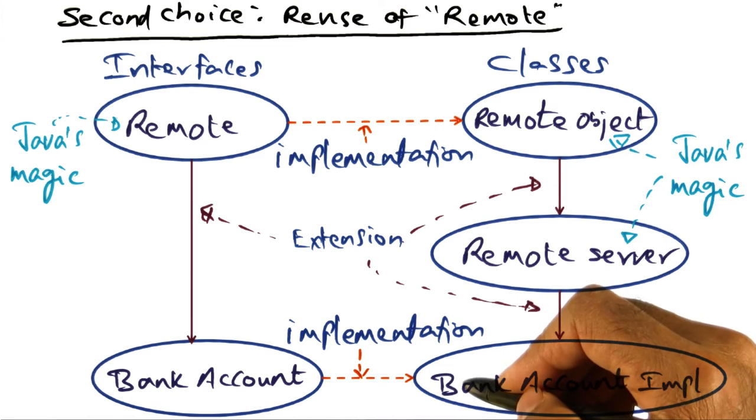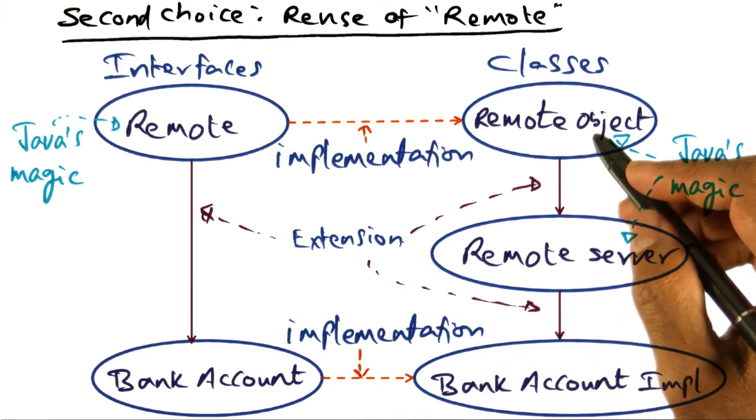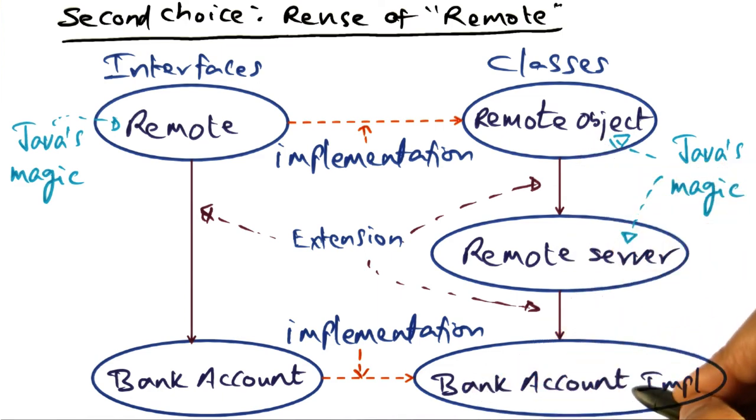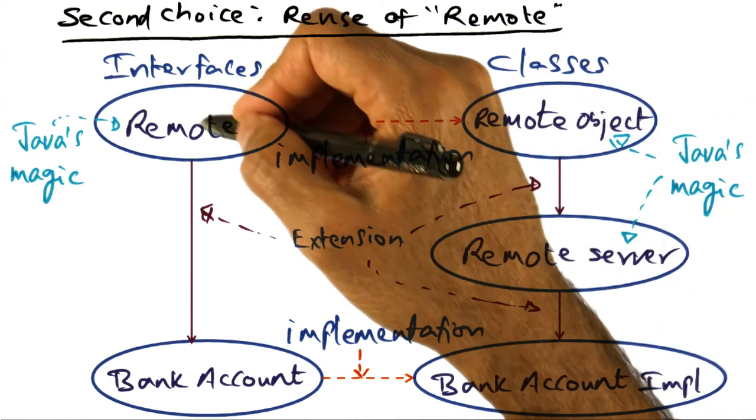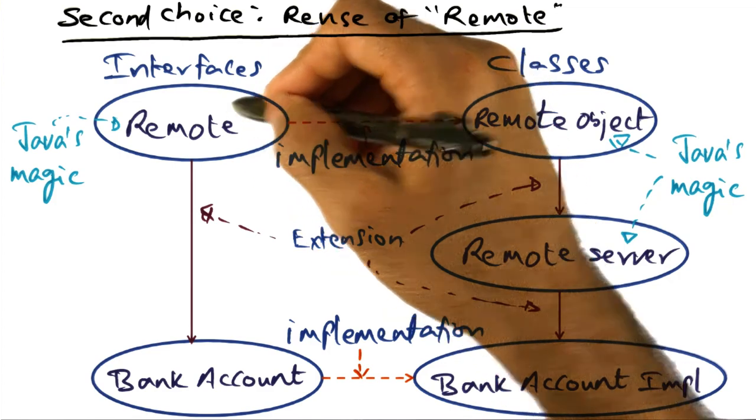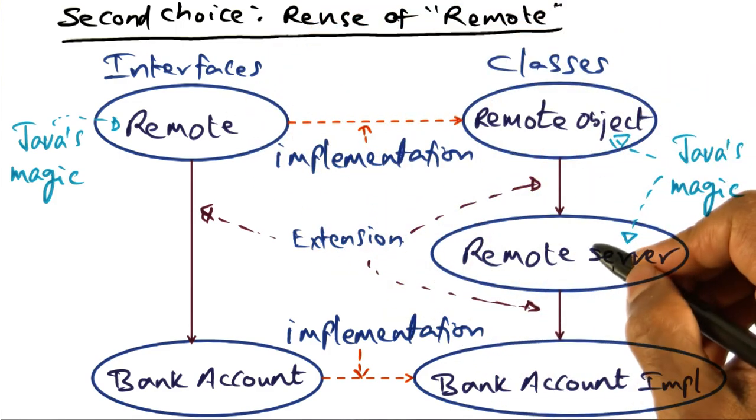You don't have to do any of the heavy lifting. So once the public methods for the bank account implementation are written by inheriting these built-in classes of Java, all the way starting from the remote interface, remote object, and the remote server,